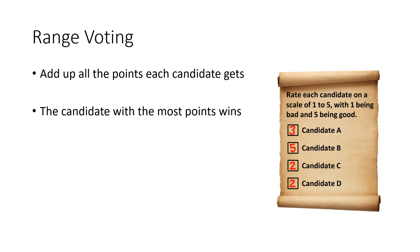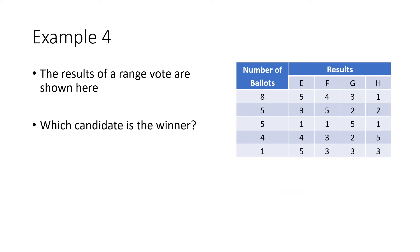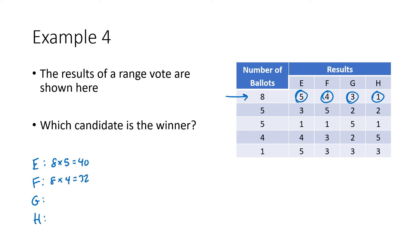We have a voter profile where eight ballots each rated candidate E as five, F as four, G as three, and H as one. From those eight ballots: E gets 8×5 = 40 points, F gets 8×4 = 32 points, G gets 8×3 = 24 points, and H gets 8×1 = 8 points. Then five ballots rated E as three, F as five, G as two, and H as two: E gets 5×3 = 15, F gets 5×5 = 25, G gets 5×2 = 10, and H gets 5×2 = 10.